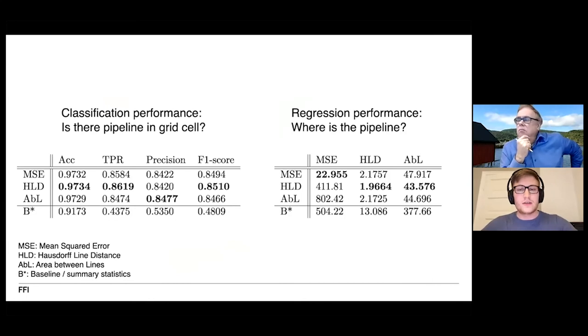Here we have a summary of the performance of the models in both the classification and the regression task. On the rows we see three different deep learning models or the same deep learning model but trained with three different regression loss functions: the mean squared error, the Hausdorff line distance, and the area between lines. Lastly, we have the baseline or rather the summary statistics which is what we try to compare against because we try to evaluate whether we can use deep learning within this framework on this dataset with these labels and this label format.